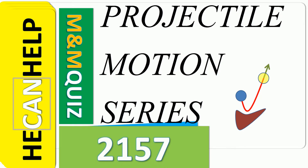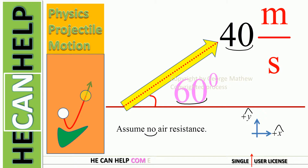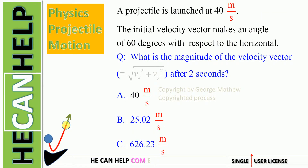Welcome to hecanhelp.com. This is a projectile motion quiz. We have an initial velocity vector of 40 meters per second at 60 degrees with respect to the horizontal. Assume no air resistance. Positive x is to the right, positive y is vertically up. A projectile is launched at 40 meters per second, and the initial velocity vector makes an angle of 60 degrees with respect to the horizontal.